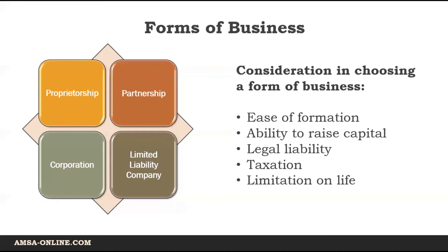There are several factors that should be considered when choosing a form of business organization. A proprietorship is the easiest business to form. However, a proprietorship has the disadvantage of unlimited liability for the proprietor. Also, a proprietorship's organizational life is limited by the life of the owner.